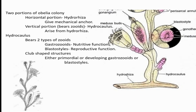The gastrozoid is the nutritive zooid — it gives nourishment and food for this colony. The blastostyle is the reproductive zooid — it helps in the reproduction of the colony. Certain club-shaped structures are also present; these are primordial or early developmental structures that can later develop into a gastrozoid or a blastostyle.